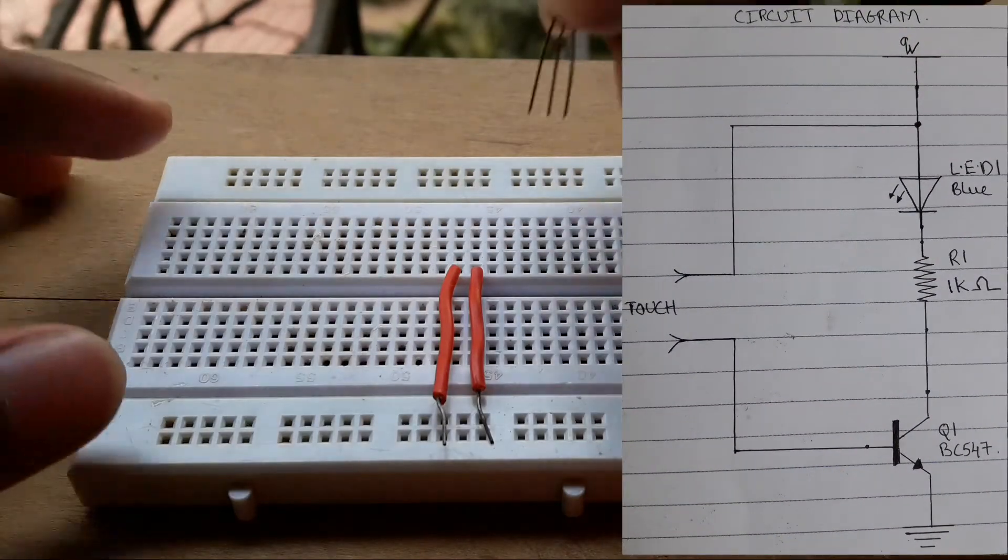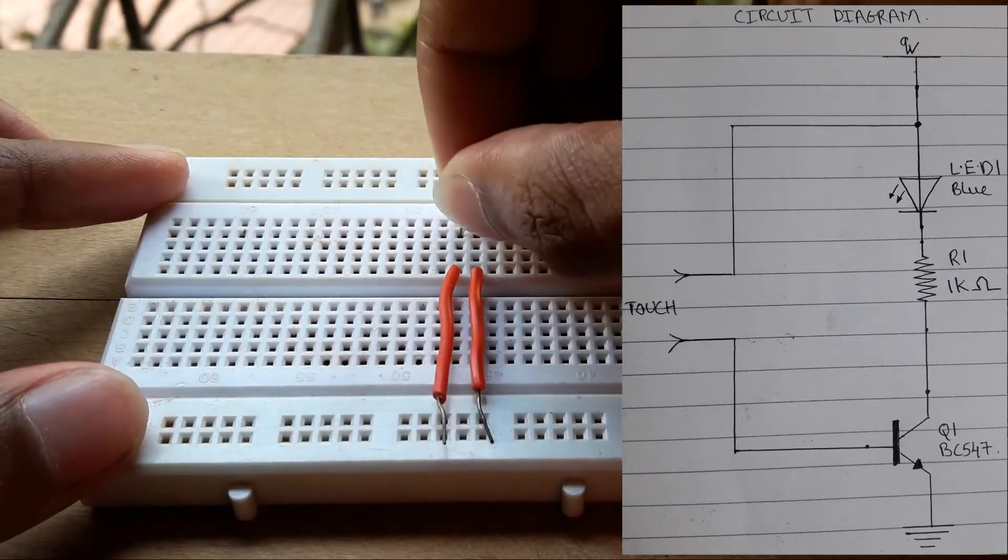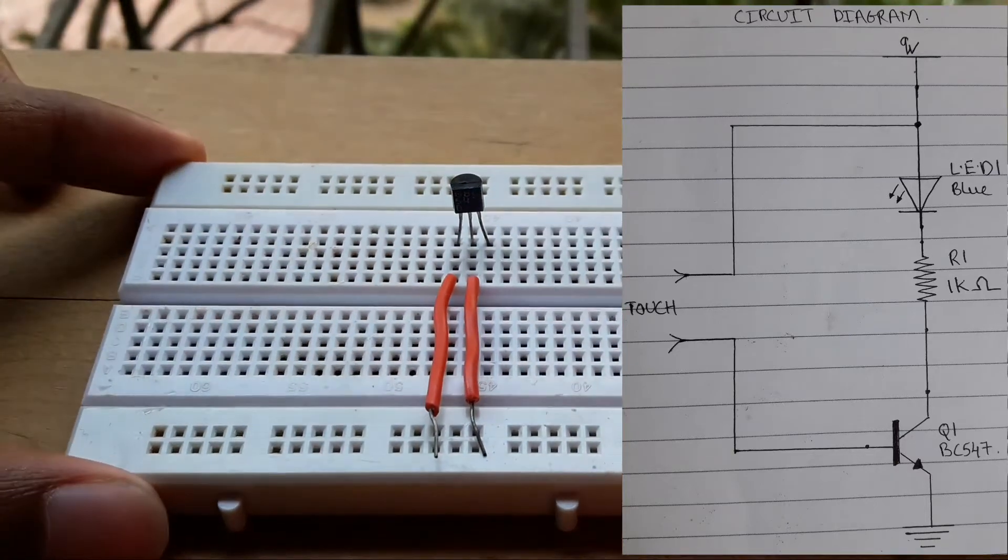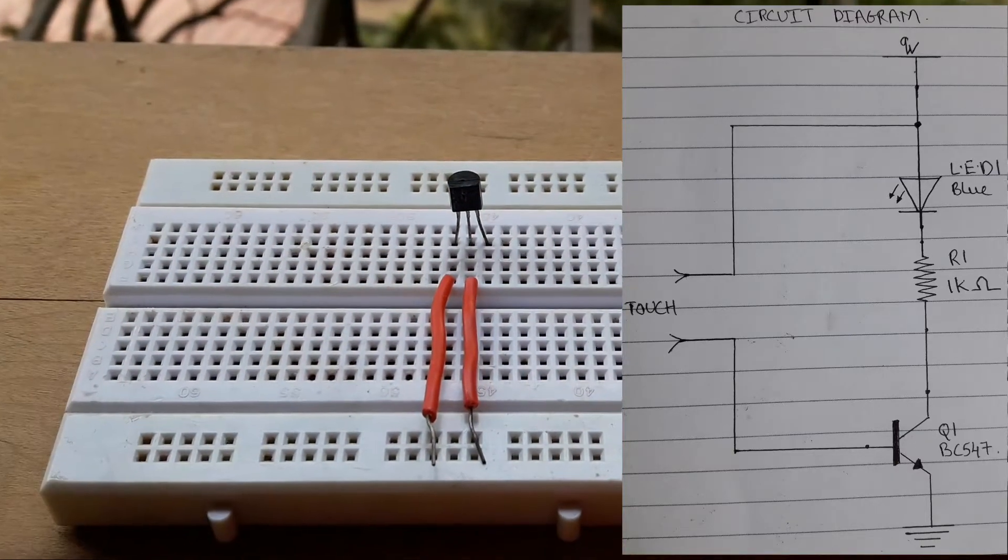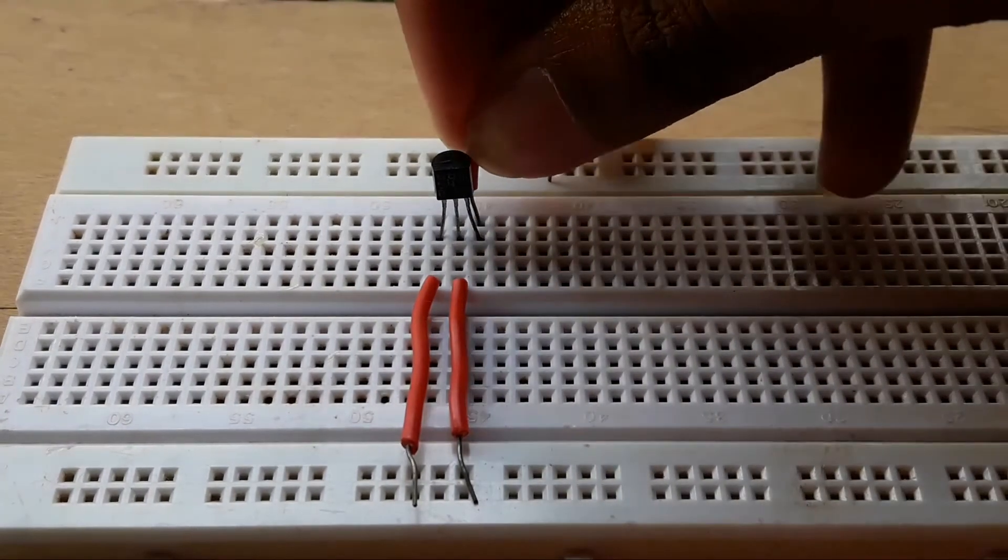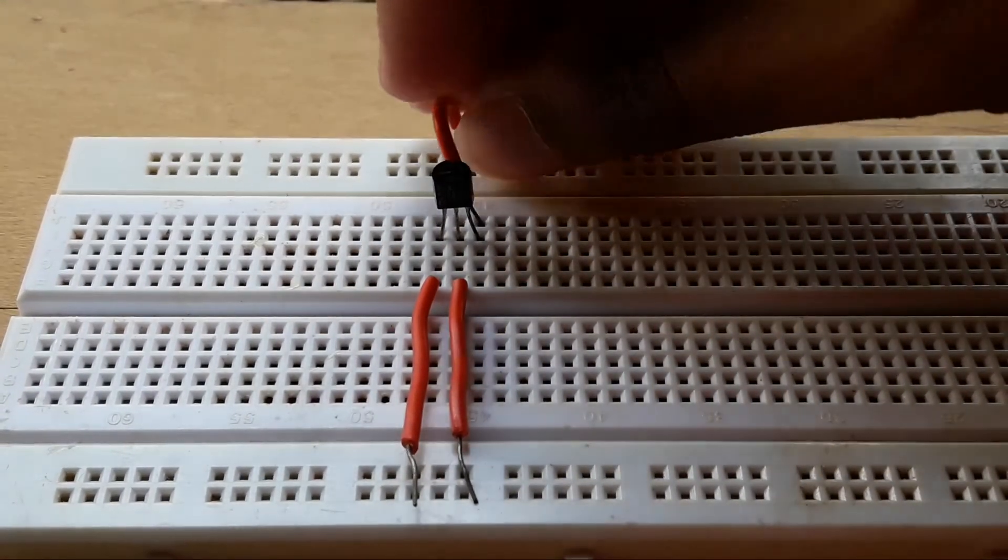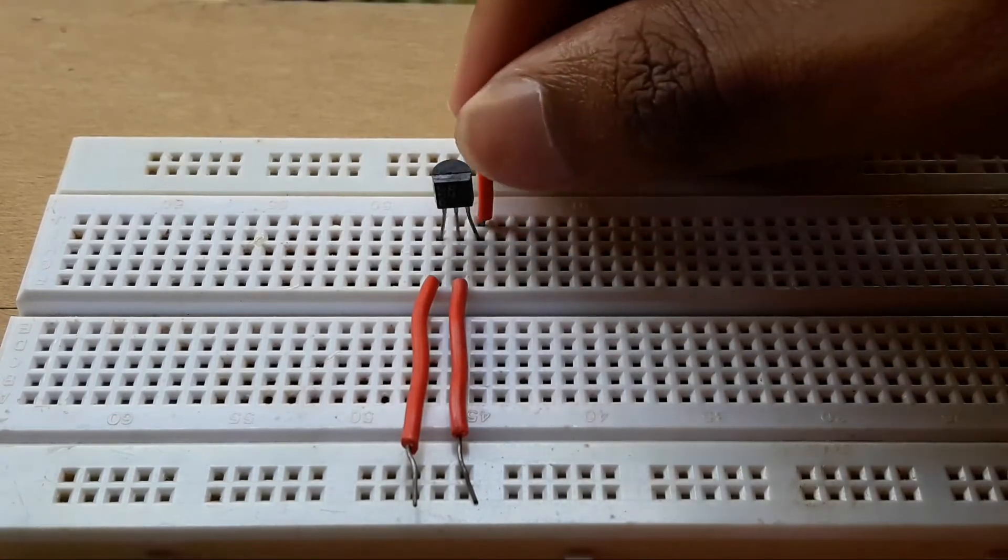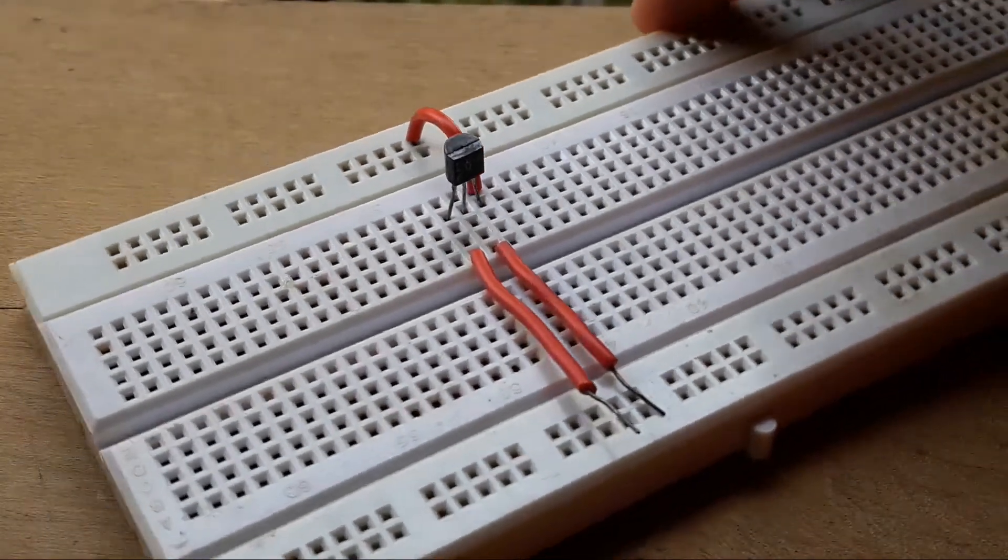Place the BC-507 transistor on the breadboard and connect two wires from the collector and the base of the transistor. Now take another wire and connect it from the emitter of the BC-507 transistor to the negative rail of the breadboard.